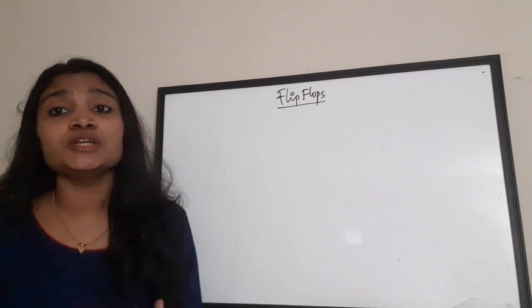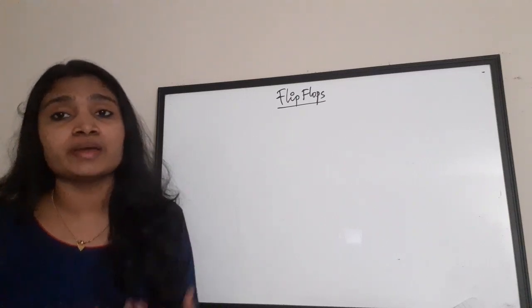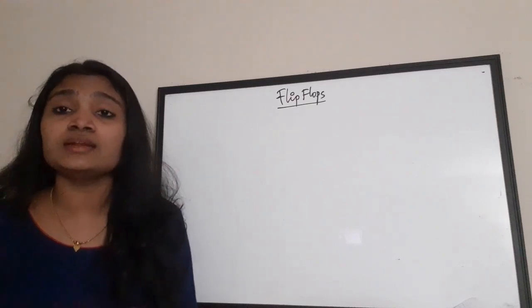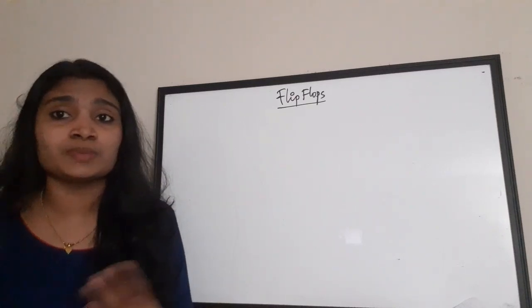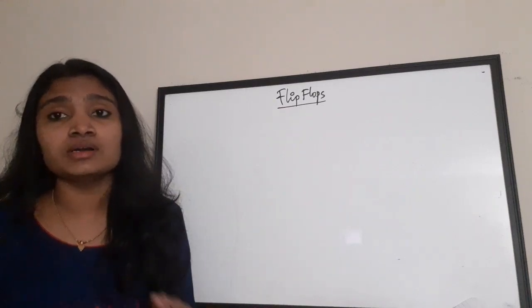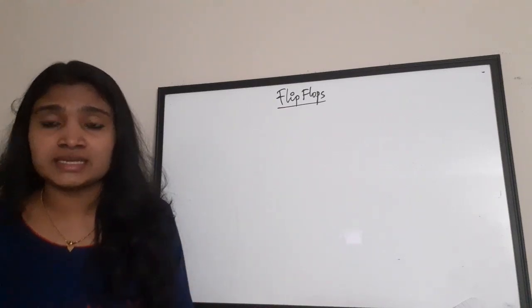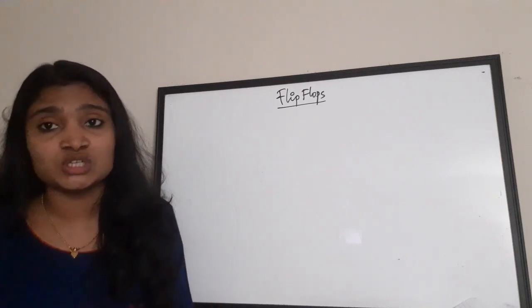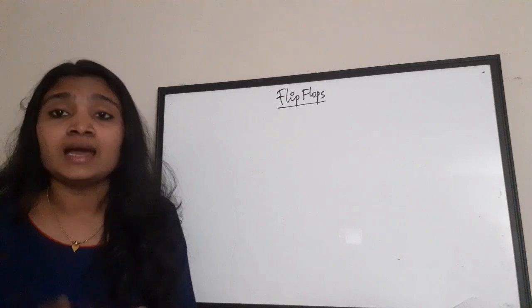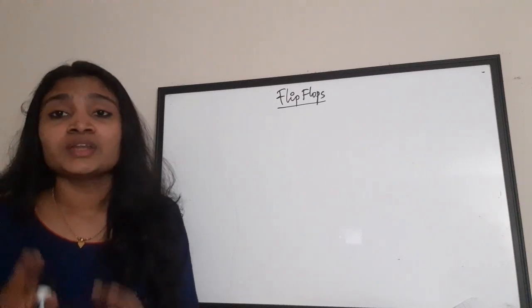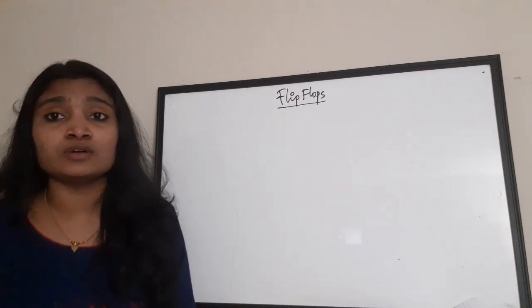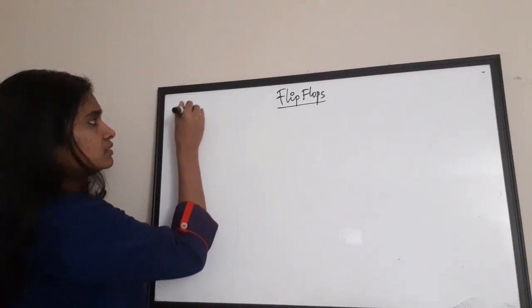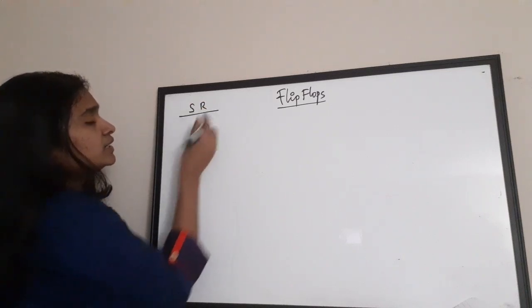Welcome to Easy Electronics. In this video we are going to see some tips to remember the truth table and excitation table of flip-flops. We know that there are four types of flip-flops: SR, JK, Toggle, and D. We'll see how to study these flip-flops' truth tables and excitation tables very easily and how to remember them for your examination. This is actually a summary of flip-flops.